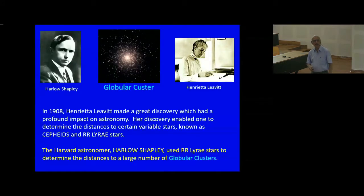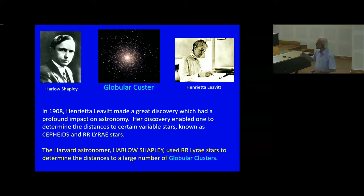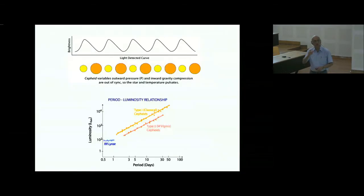A major breakthrough was made when Henrietta Leavitt made a very important discovery in the year 1908. She was working in the Harvard Observatory, and her discovery enabled one to determine distances to certain special kinds of stars. That revolutionized astronomy. Let us briefly recall the spectacular discovery she made.